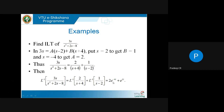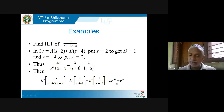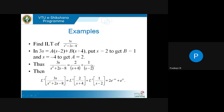So 3s/(s²+2s−8) = 2/(s+4) + 1/(s−2). Using linearity: L⁻¹ = 2·L⁻¹{1/(s+4)} + L⁻¹{1/(s−2)} = 2e^(−4t) + e^(2t). You can verify: take Laplace of 2e^(−4t) + e^(2t), which gives 2/(s+4) + 1/(s−2), and combining these fractions gives 3s/(s²+2s−8).